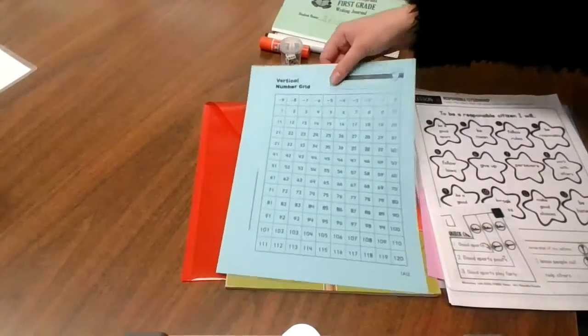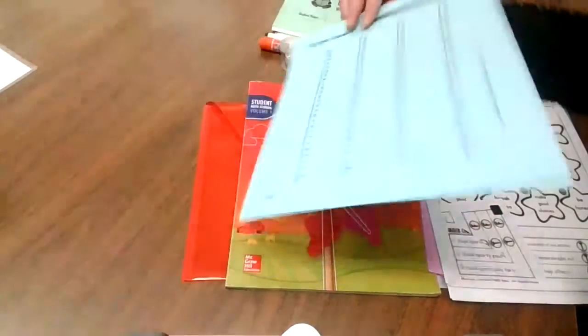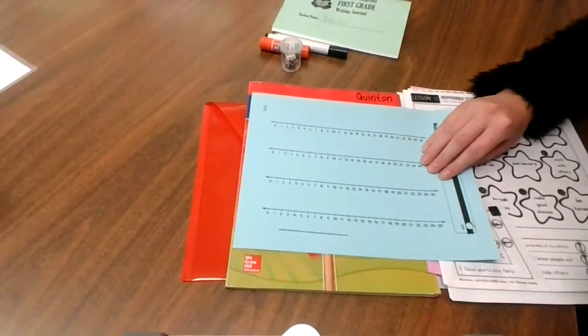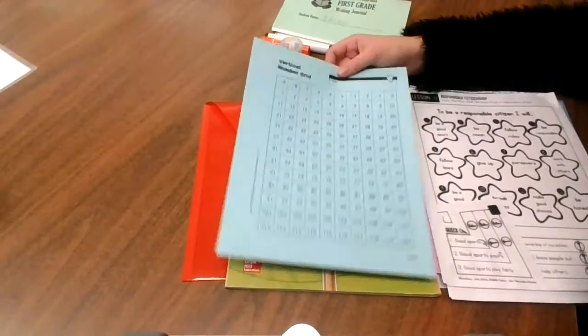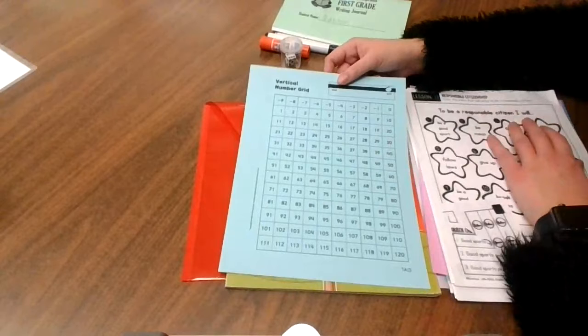Then just a quick number grid. Your students can use this to solve a lot of math problems. On the opposite side they have some number lines they can use as well. Just a quick resource for them to grab if they need to hop on a number grid or they're trying to solve a problem.